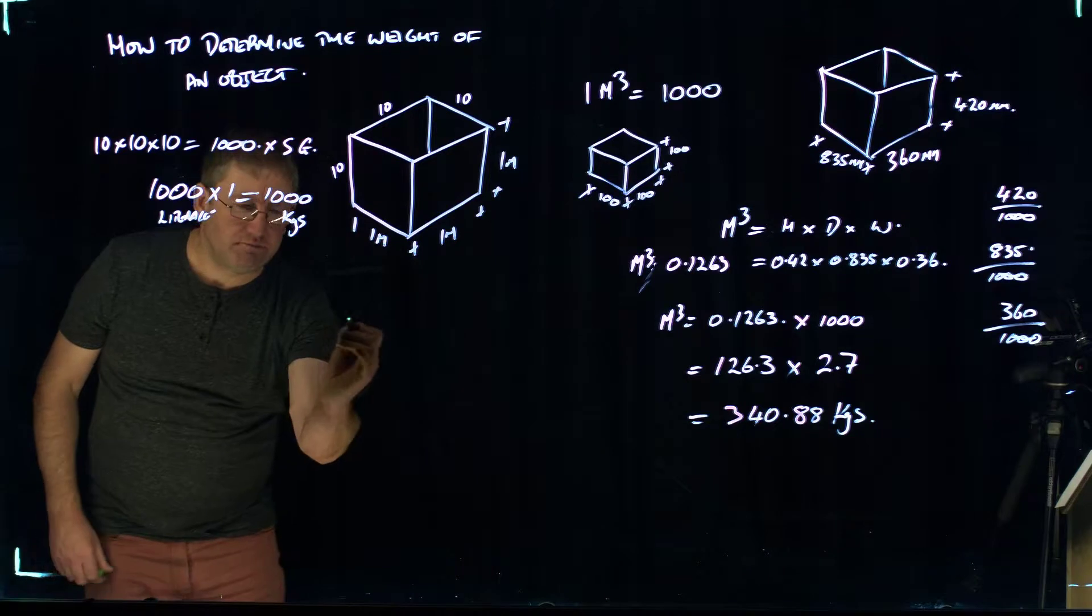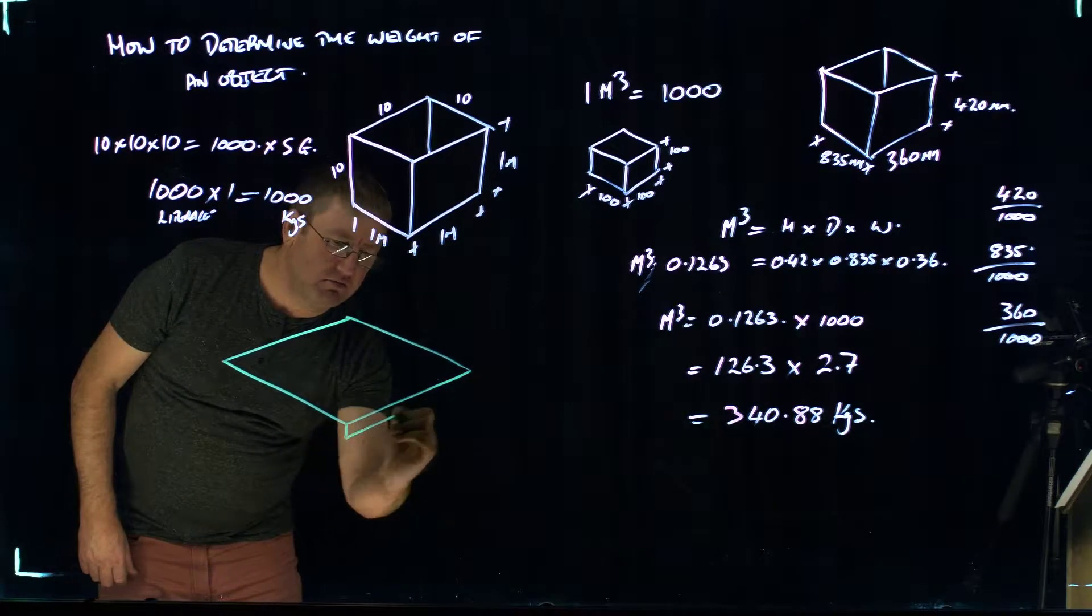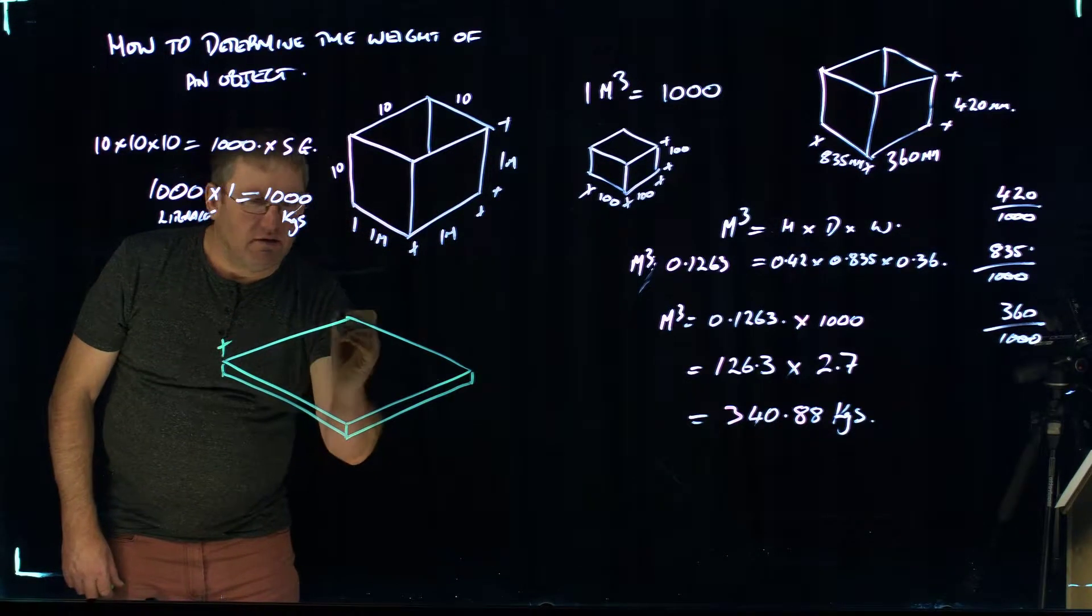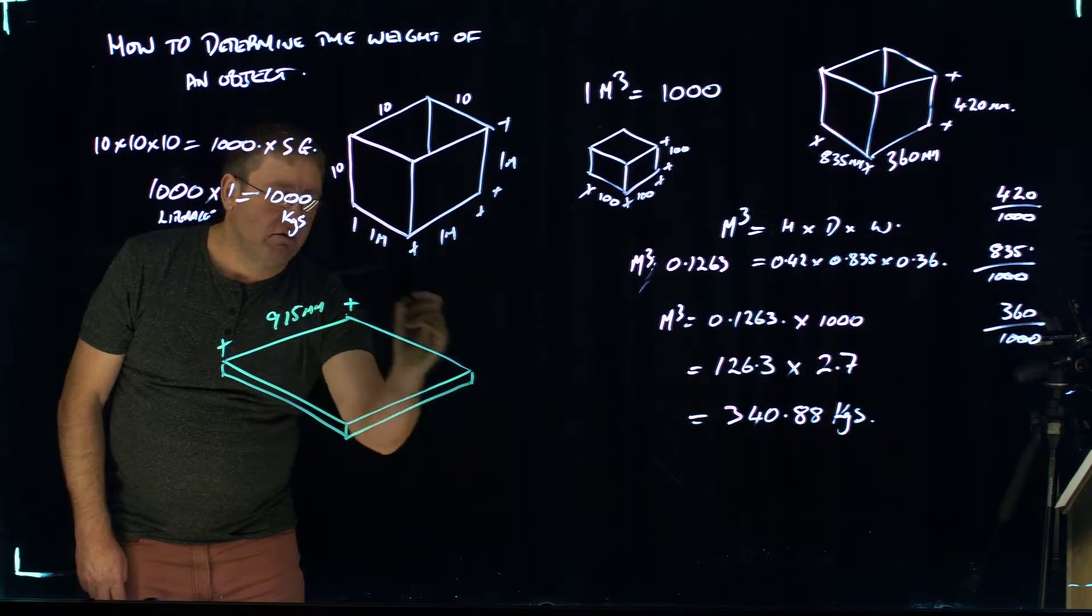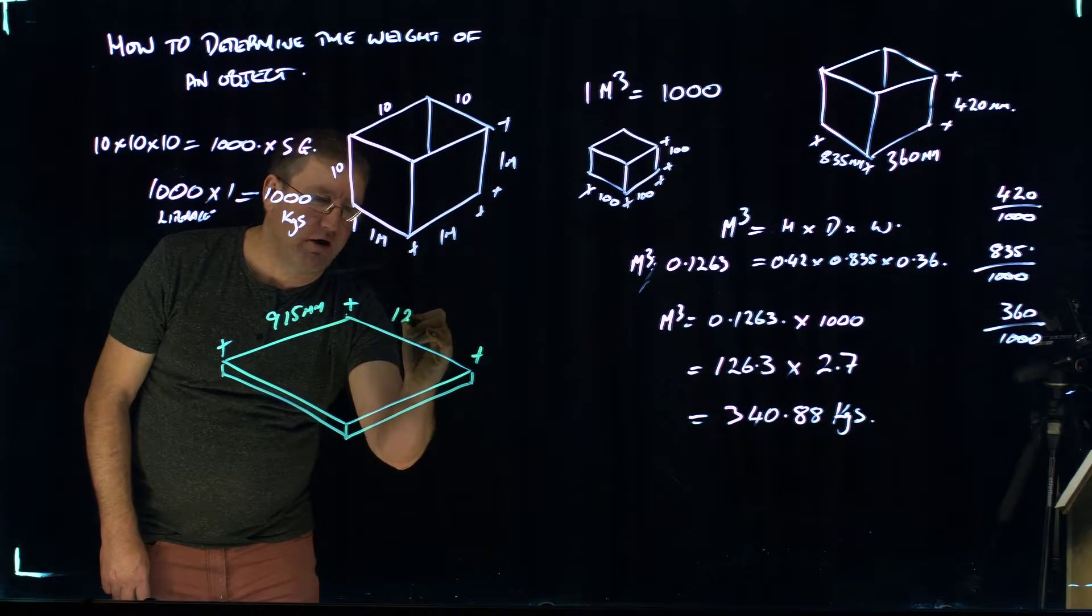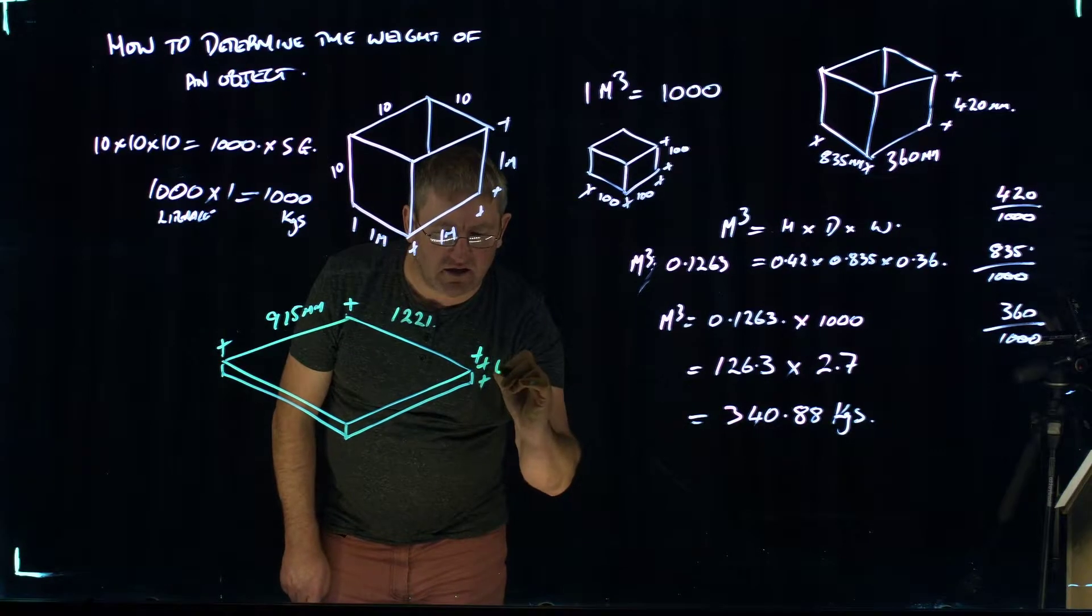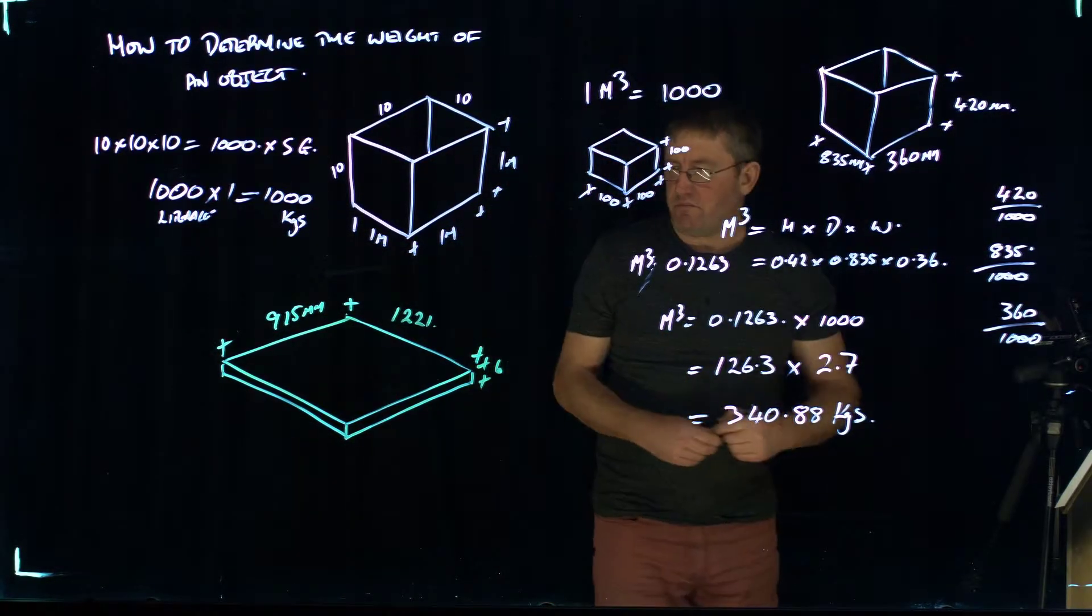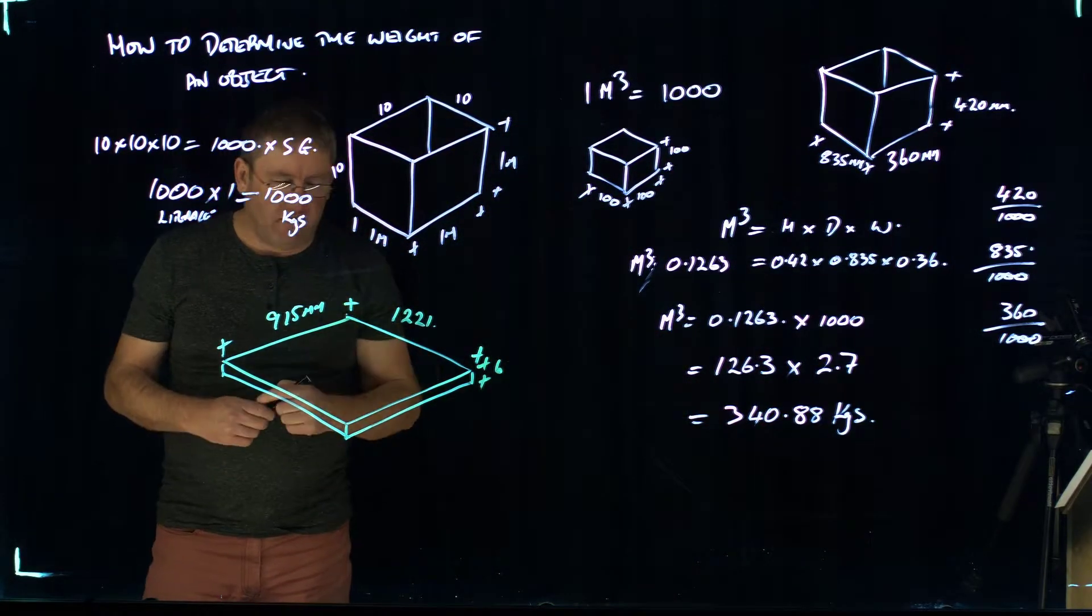We'll do another one. We'll say it's a sheet of metal. You want to know whether you can lift this sheet of metal. Let's say that the sheet is 915 millimeters wide and it's the full width of a sheet. So 1,221 millimeters, and it's going to be 6 millimeters thick. So we want to know what the weight of that sheet is.